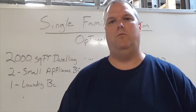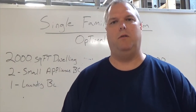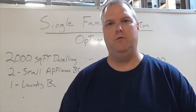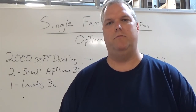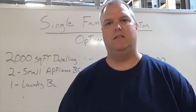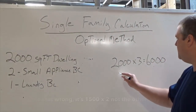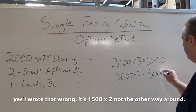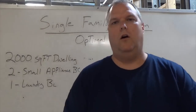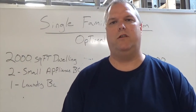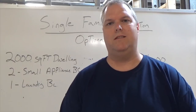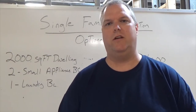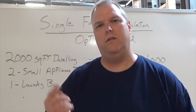We calculate our small appliance branch circuits at 1,500 VA per circuit. The minimum code requires two circuits, so we multiply 1,500 by two, giving us 3,000 VA. According to code, our laundry branch circuit is taken at 1,500 VA — this stays contained to the laundry room, and anything added beyond that is irrelevant here. We have one laundry circuit, so we add 1,500 VA.